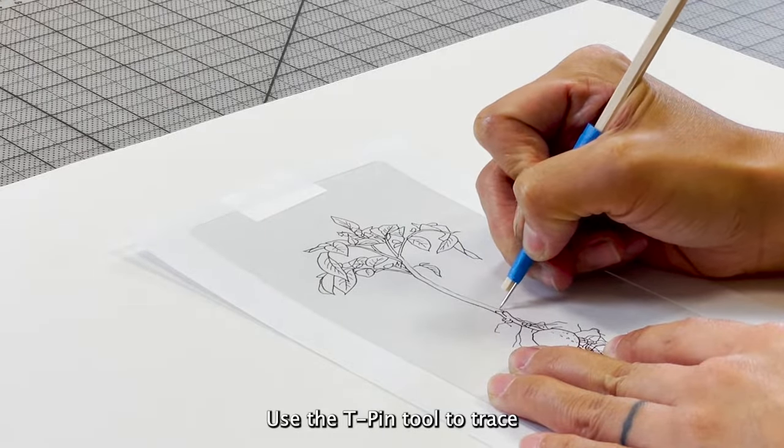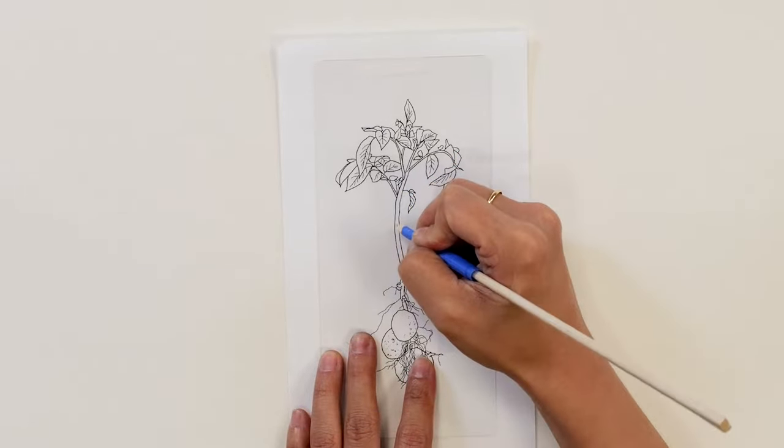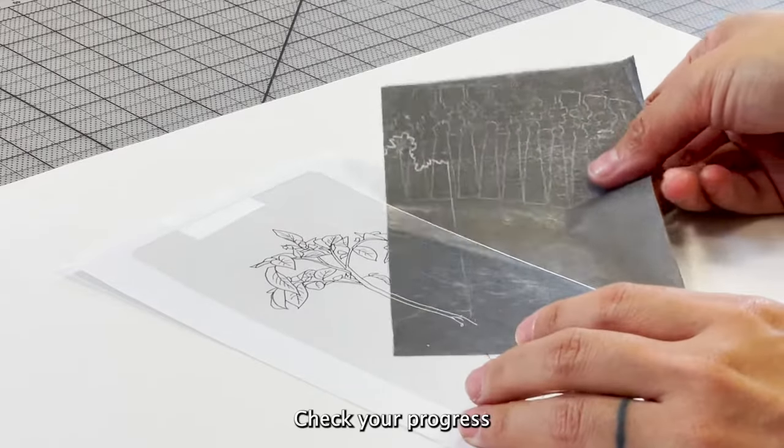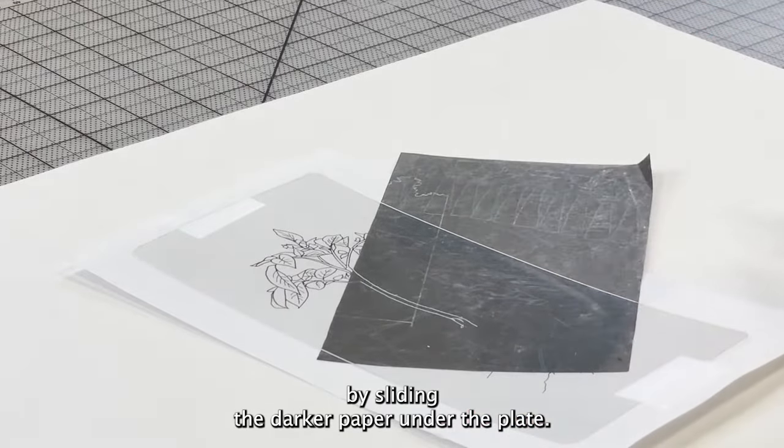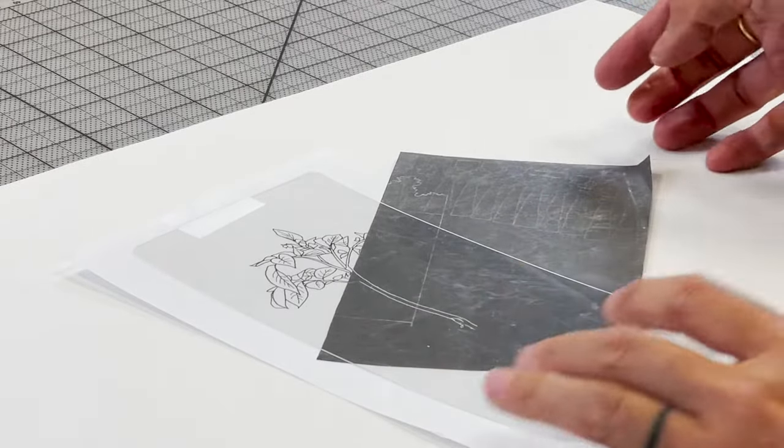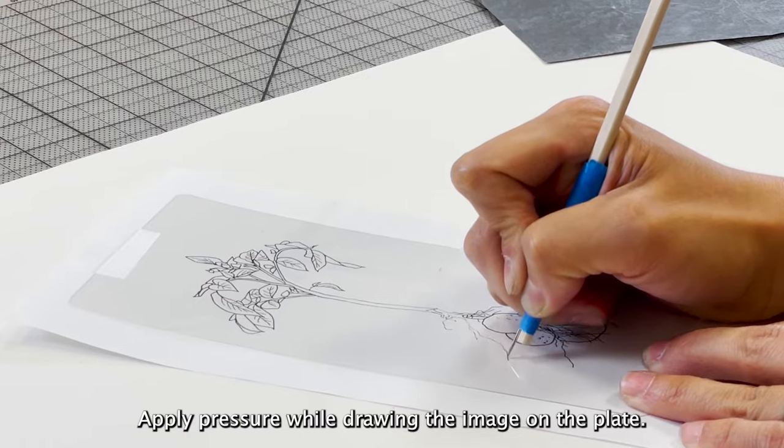Use the T-pin tool to trace and draw the design on the plate. Check your progress by sliding the darker paper under the plate. Apply pressure while drawing the image on the plate.